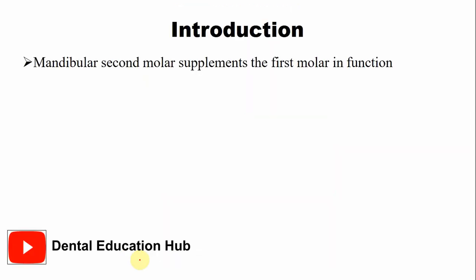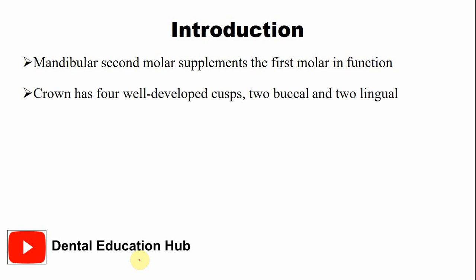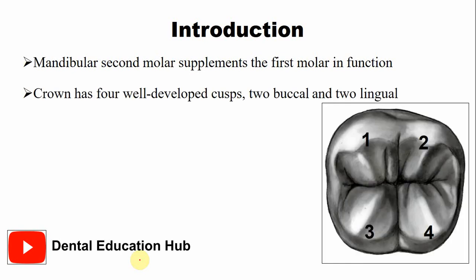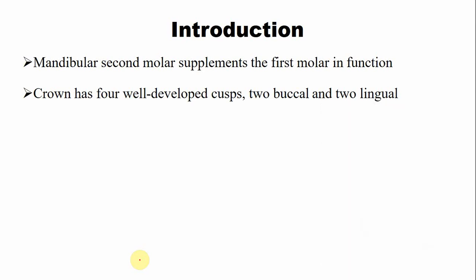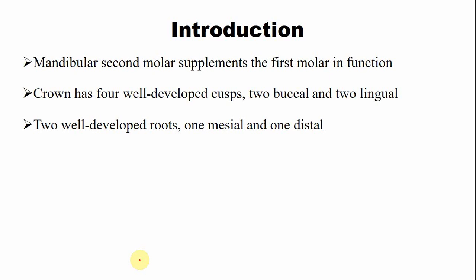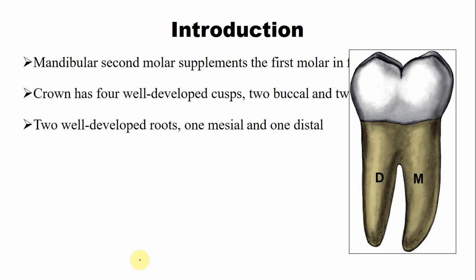The mandibular second molar supplements the first molar in function, which is the grinding of food. The crown of the mandibular second molar has four well-developed cusps — two are the buccal cusps and two are the lingual cusps, as seen in this picture. There are two well-developed roots: one mesial and one distal root.